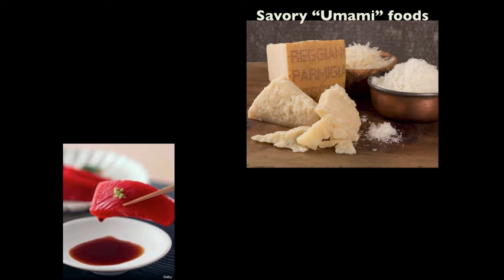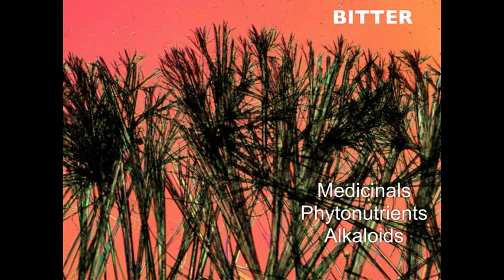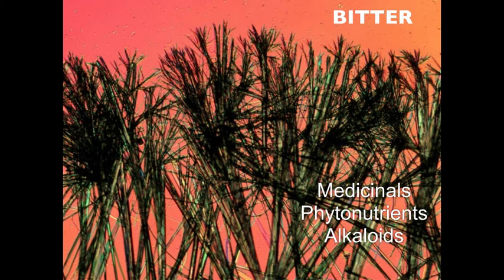In case you are unfamiliar with savory umami foods: cheese, mushrooms, soy sauce, seaweed, tomatoes. All of these foods will influence or improve your experience, at least of red wine. Don't we often serve cheese and crackers with wine? Now we know why. Bitter. Bitter prickly. The kinds of compounds that give us bitter experiences are drugs, phytonutrients, alkaloids, poisons. This is not a poison. This is my morning wake up: caffeine through the microscope.